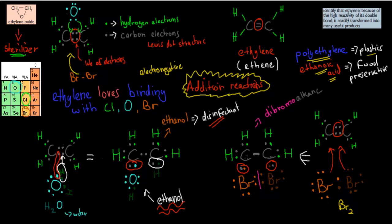To recap the dot point: identify that ethylene, because of its high reactivity of its double bond, is readily transformed into many useful products. The double bond is really reactive because electronegative elements such as chlorine, oxygen, and bromine love attaching to it. When they do, we can form different products: ethanol, which is a disinfectant; ethylene oxide, which is a sterilizer; polyethylene, which is a plastic; and ethanoic acid, which is used as a food preservative. Know why that happens and what products we can produce using ethylene.